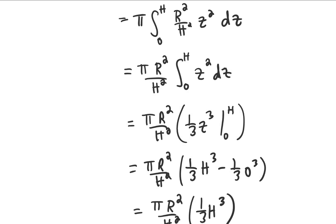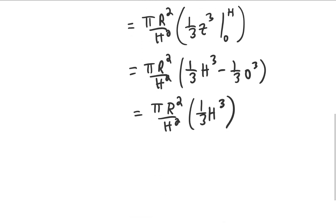And if we simplify, we can cancel two of the H's from the denominator with the H's in the numerator, bring the one third out front, and we get one third πR²H, which as expected is the volume of a cone.